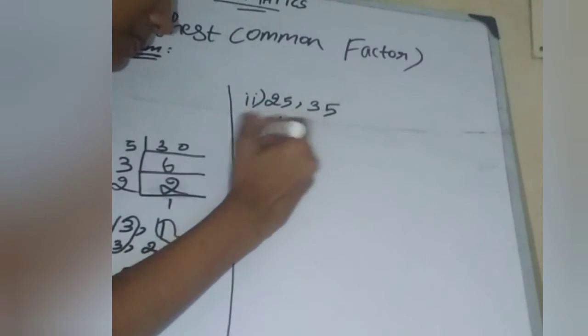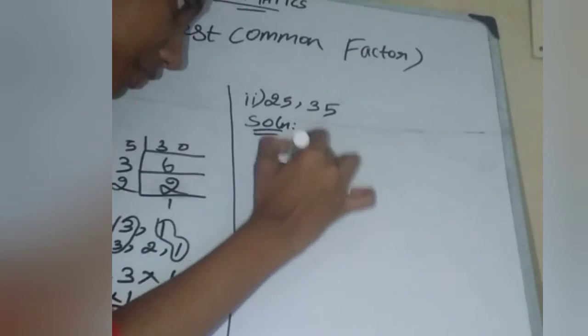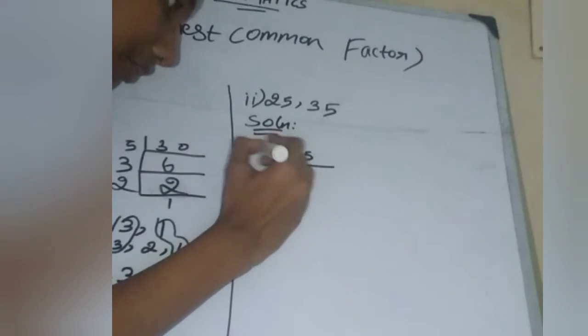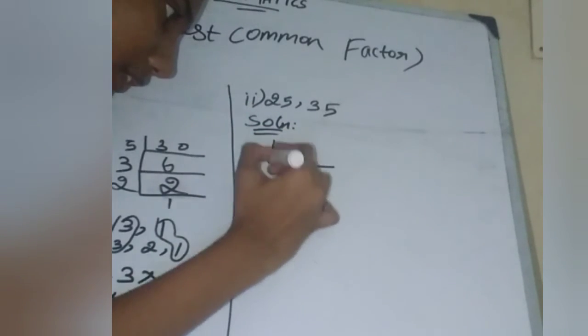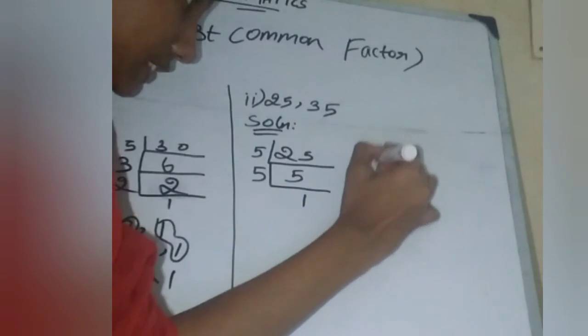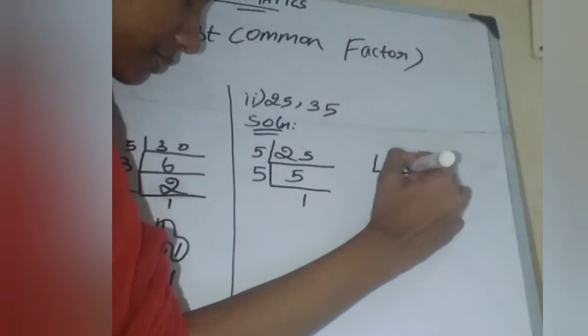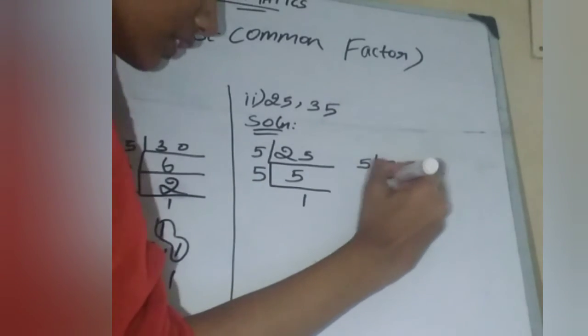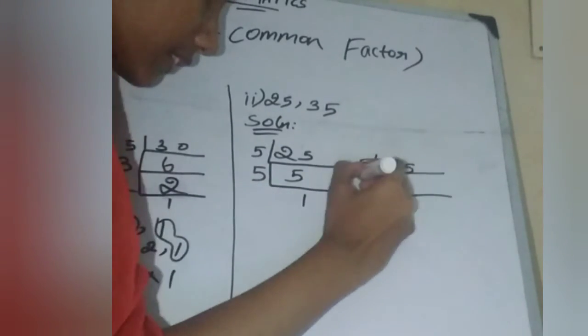For 25, 5 times 5 equals 25. For 35, 5 times 7 equals 35.